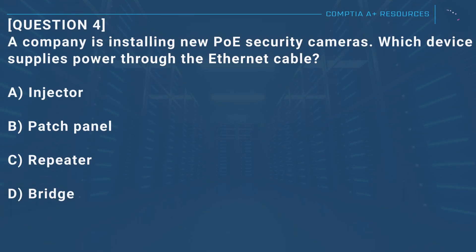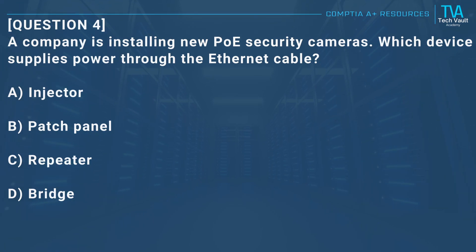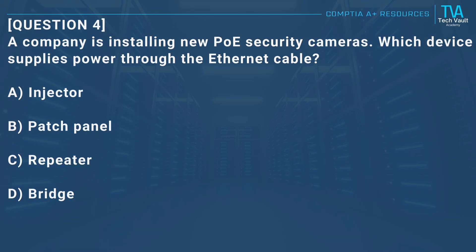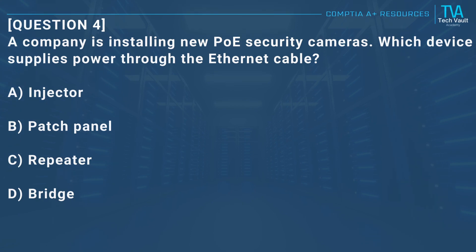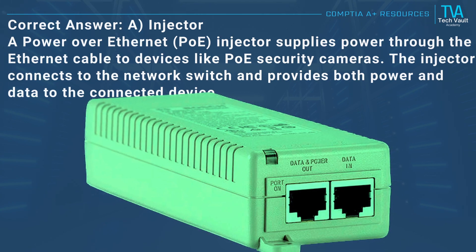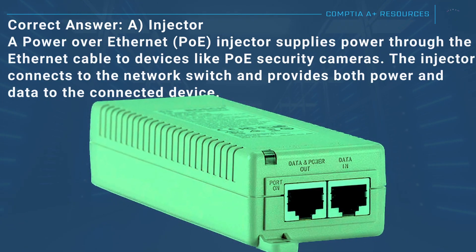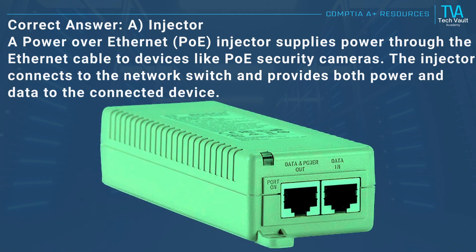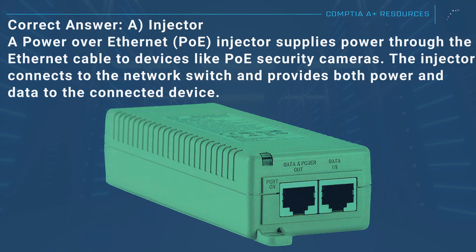Question 4: A company is installing new PoE security cameras. Which device supplies power through the Ethernet cable? A, injector. B, patch panel. C, repeater. D, bridge. Correct answer: A, injector. A Power over Ethernet (PoE) injector supplies power through the Ethernet cable to devices like PoE security cameras. The injector connects to the network switch and provides both power and data to the connected device.